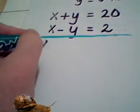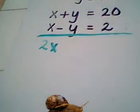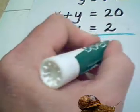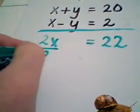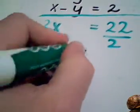X plus X becomes 2X. The Y's cancel out, and I'm left with 20 plus 2, which is 22, divide by 2, and therefore, X is equal to 11.